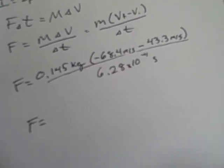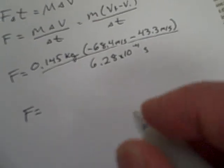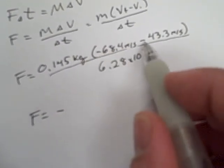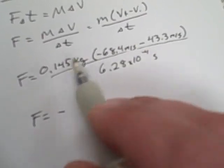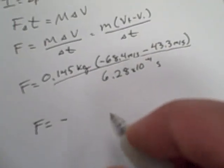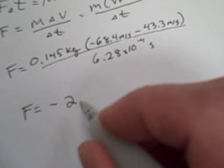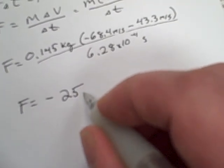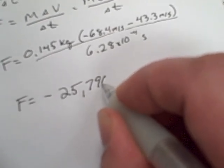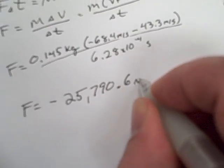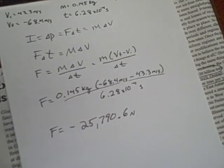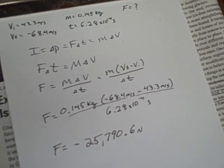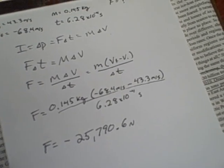The average force during the time that the bat is in contact with the ball is negative, because you're going to have this minus this, which gives you a larger negative quantity, times the mass divided by the time. Negative 25,790.6 Newtons of force that changed the momentum of the ball such that it changed direction heading back towards the pitcher.